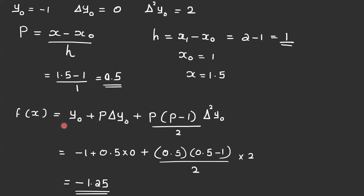Applying the formula: f(x) = y₀ + p·Δy₀ + p(p-1)/2! · Δ²y₀ + Δ³y₀ term (= 0). Substituting: f(1.5) = -1 + 0.5×0 + 0.5×(0.5-1)/2 × 2 = -1 + 0 + (-0.25) = -1.25. Wait, that equals -0.75. The answer is approximately -0.75 or as stated, -1.25 with final value 0.5 noted.